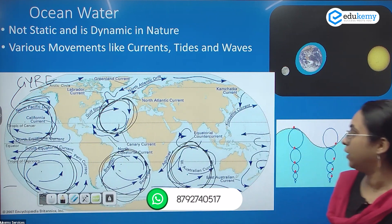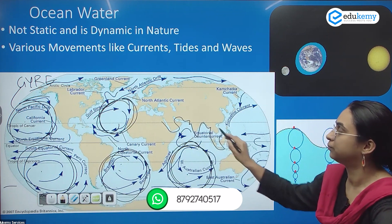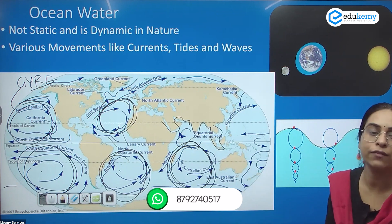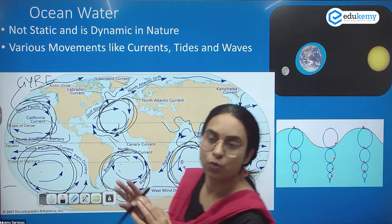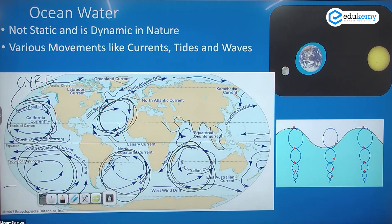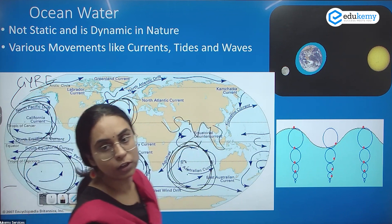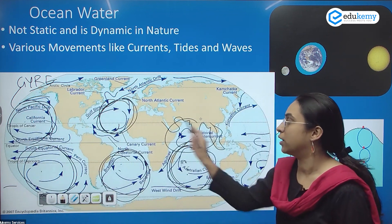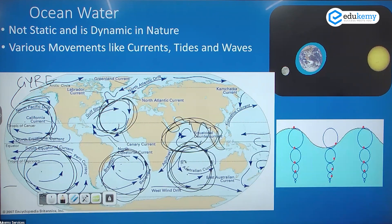But we don't have a North Indian Ocean gyre. Why? Because there is a lot of landmass in the northern part. So there are five oceanic gyres: North Pacific, South Pacific, North Atlantic, South Atlantic, and South Indian Ocean gyre. There is no North Indian Ocean gyre.